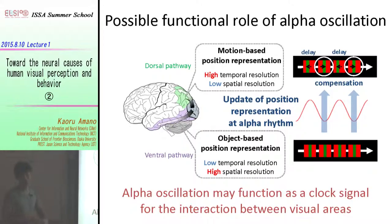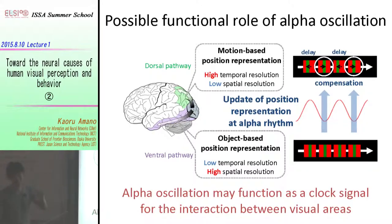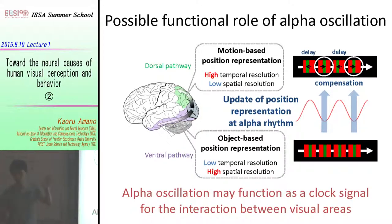Why is resting state alpha power reduced during active conditions? The generation mechanism of alpha oscillation is not fully established, but it is generally thought to be generated based on the interaction between the thalamus and visual areas through thalamocortical loops. The basic idea is that alpha oscillation already exists, and the visual system makes use of that oscillation to determine the timing of the interaction. That's the hypothesis.